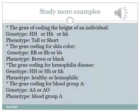Some genes may also code for diseases, such as hemophilia. A healthy individual will have the genotype HH or Hh, but if the genotype is hh, he will be hemophilic.